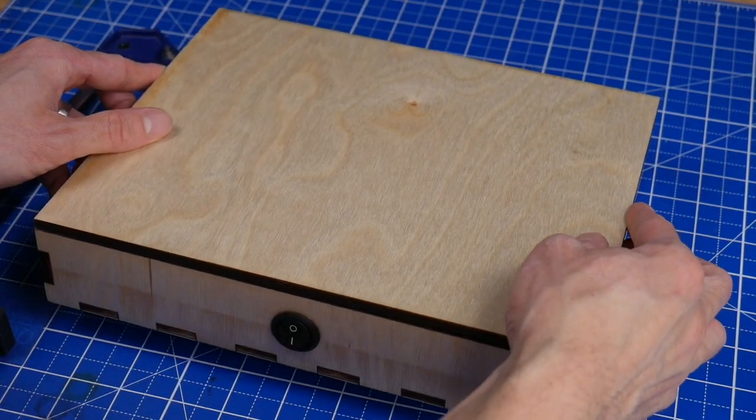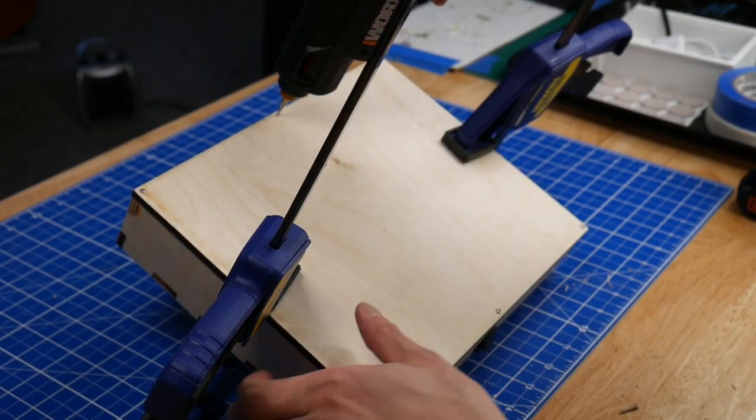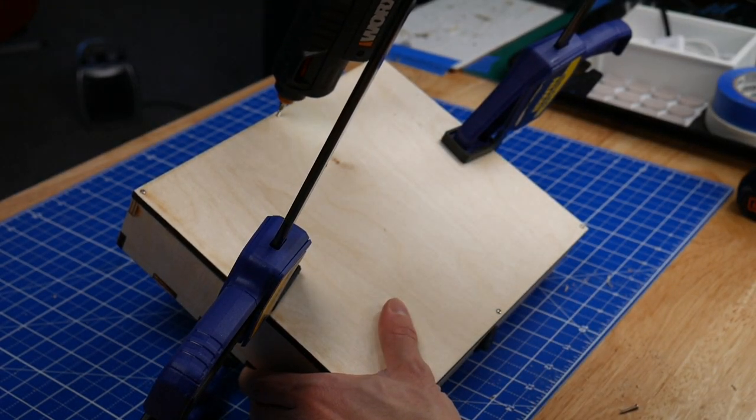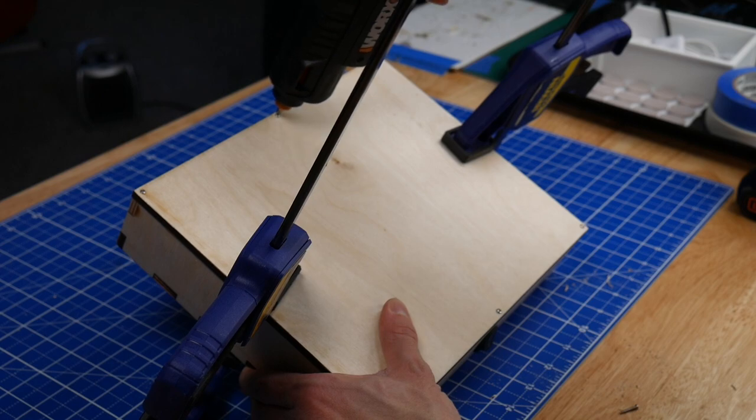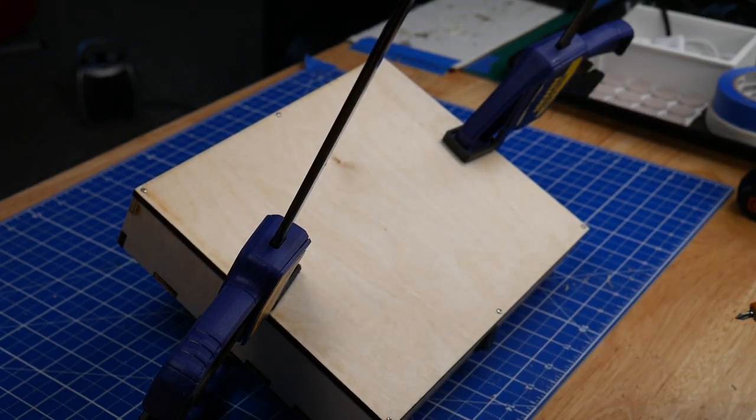Okay, now that everything is working, it's time to put on the back of the box. I thought about using finger joints like the rest of the box, but then I realized that if I needed to fix anything in the future it would be really hard to undo, so instead I just screwed it in place.